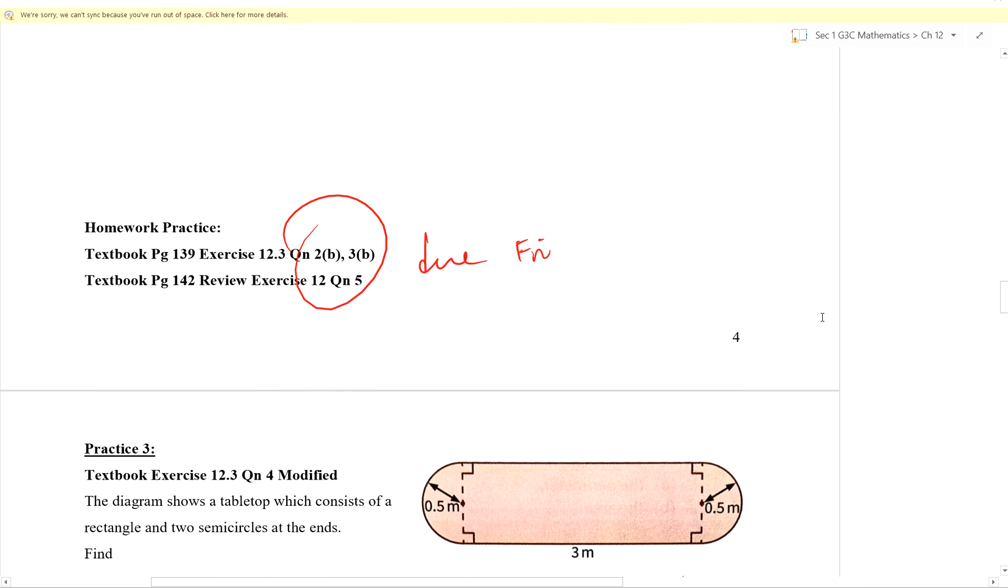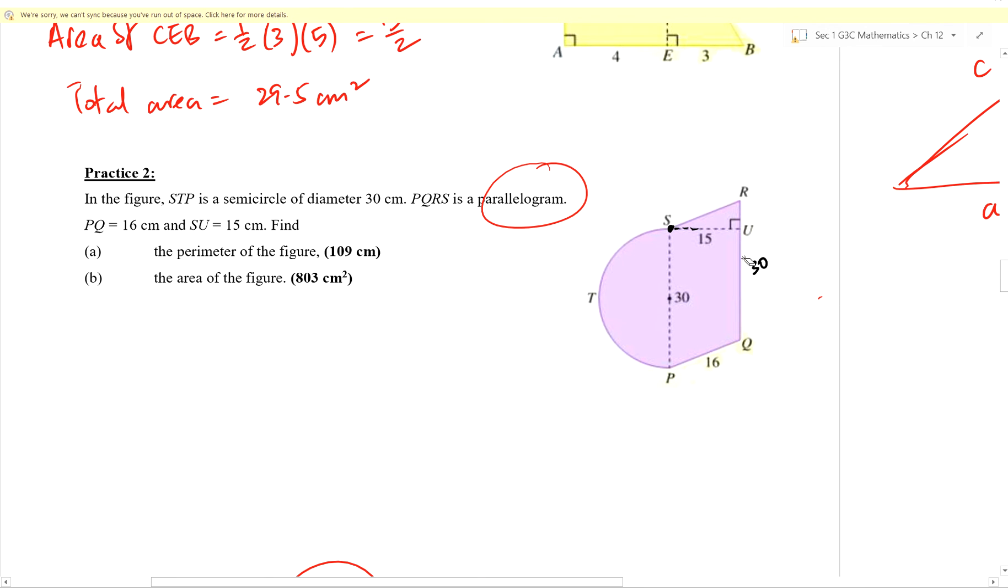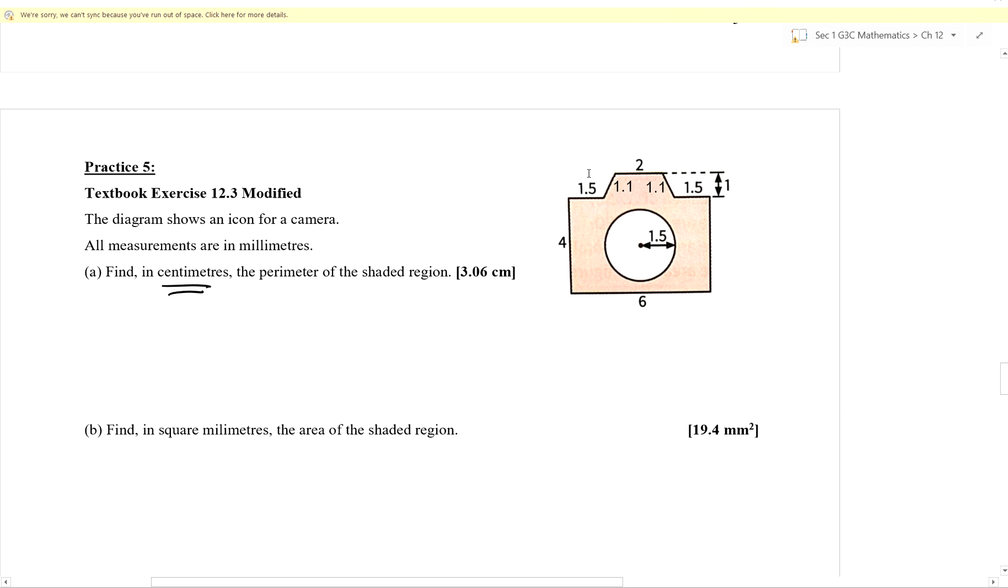Compare that with, for example, this question, practice number 2. When they ask for the perimeter over here, please do not include this line over here, and do not include this line. We can see that this is made out of many different parts. I'm sure you know how to do this. The challenge is whether you will make careless mistakes. So how do we go about doing this? Perhaps you can use a colored pencil or pen. As you write, you cancel.